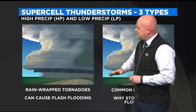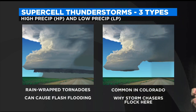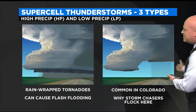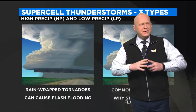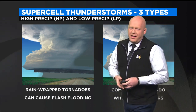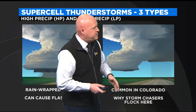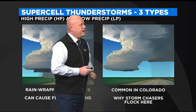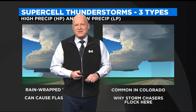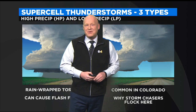Thankfully here in Colorado, we don't see that too much. This is what we are used to because we are such a dry place. We have what are called LP supercells. And the beauty of this is because there is so little precipitation, you see the complete structure of this storm. This is why so many storm chasers flock to Colorado to chase storms, because you simply see so much of the storm's structure and shape — which, even though it's dangerous and scary, can be very beautiful to see.